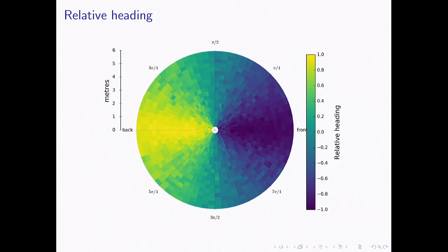The relative heading figure confirms this pattern. If a value is 1, the neighboring individual is pointing directly at the focal animal; minus 1 means pointing directly away; and 0 means moving in parallel. We see these aligned herds moving in a consistent direction, confirming the structured lane formation behavior observed in the first two analyses.